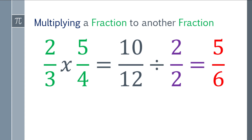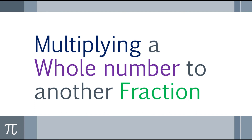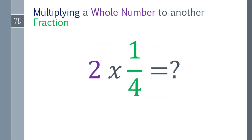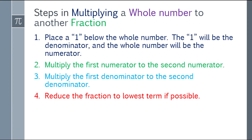The final answer is five sixths. Now let's go to the next one: how to multiply a whole number by a fraction. We have a problem like this: two times one fourth. Your whole number is two and your fraction is one fourth. The steps are: first, place a one below the whole number — the one will be the denominator and the whole number will be the numerator. Second, multiply the first numerator by the second numerator. Third, multiply the first denominator by the second denominator.